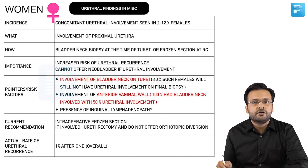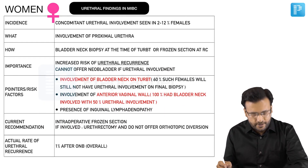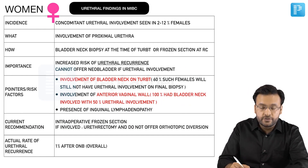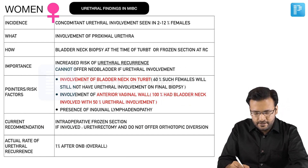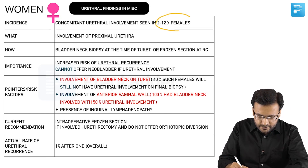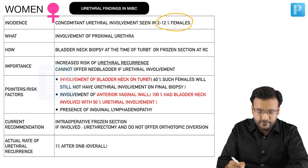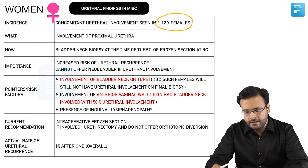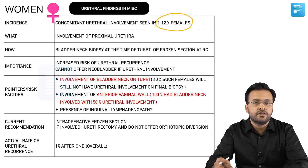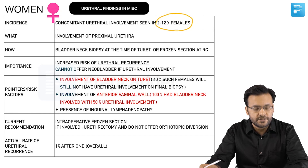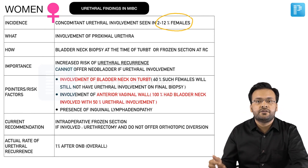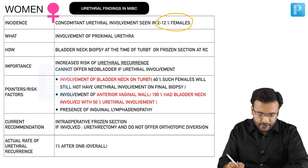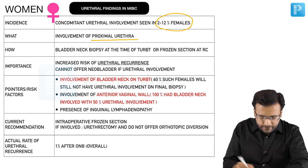Regarding assessment of the proximal urethra in females: concomitant urethral involvement with bladder cancer is seen in 2 to 12 percent of cases. To compare: in men, urethral recurrence was seen in 4 to 8 percent of patients; in women, concomitant urethral involvement is seen in 2 to 12 percent and involves the proximal urethra.